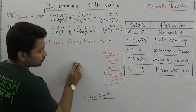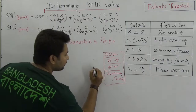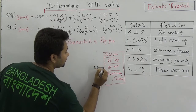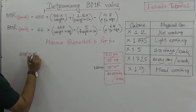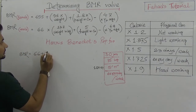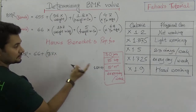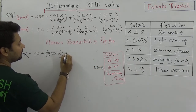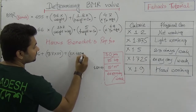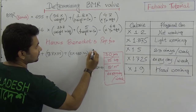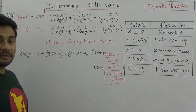So this person's height is 180.34 centimeters. Since this person is male, the BMR would be: 66 plus 13.7 times 75, plus 5 times 180.34, minus 6.8 times 30. I hope you understand: 66, plus 13.7 into weight in kilogram, plus 5 into height in centimeter, minus 6.8 into age.